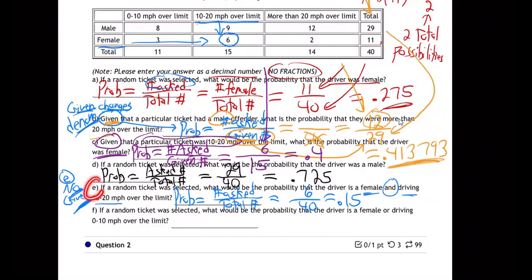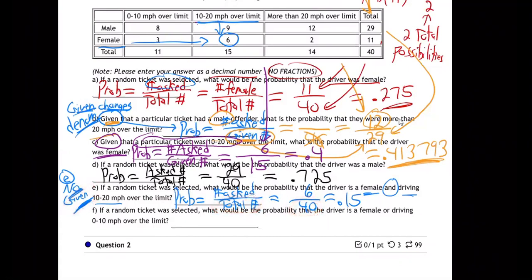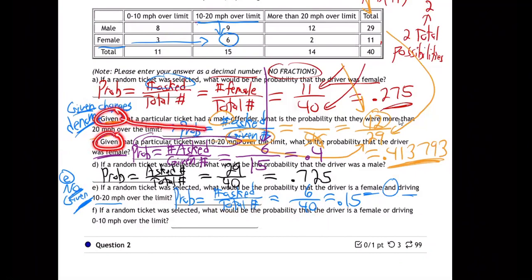So that's the reason. On E there's no given, so the denominator goes back to 40. So the denominator is the total when there's no given — like up in part A, which had no given and the denominator was 40. But B and C had given, so that changed denominators in both those cases.